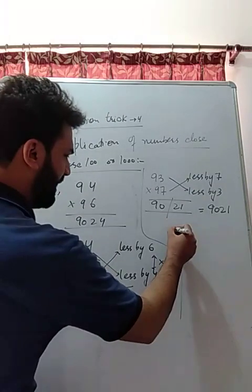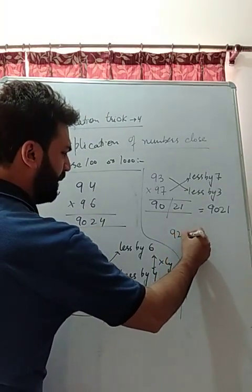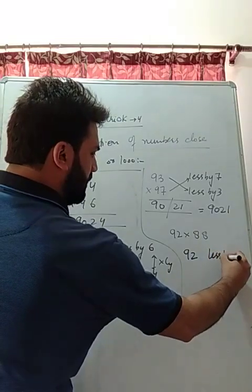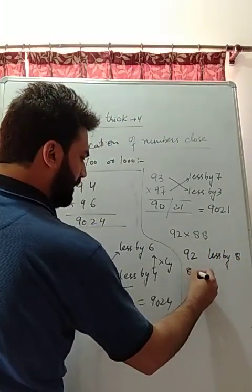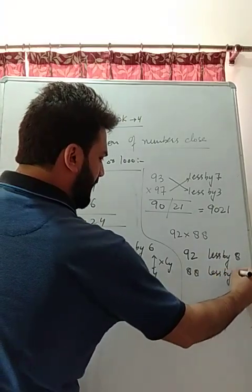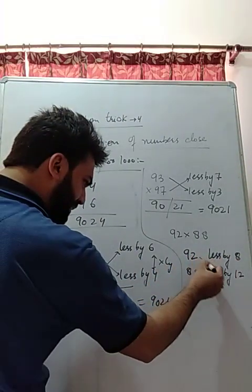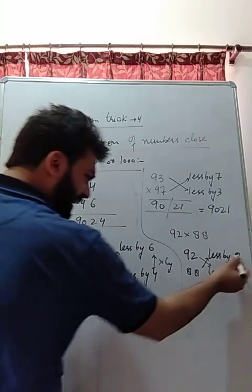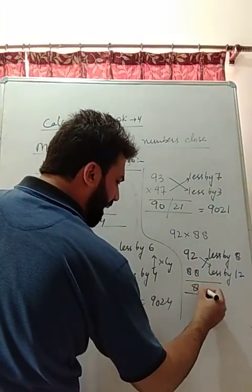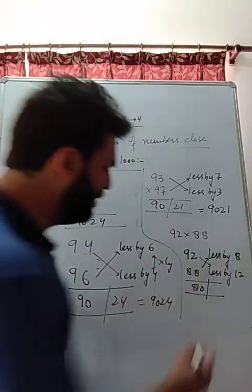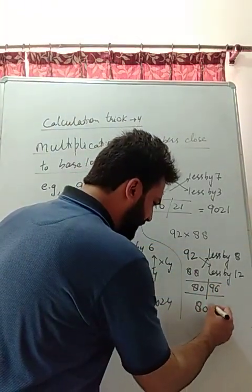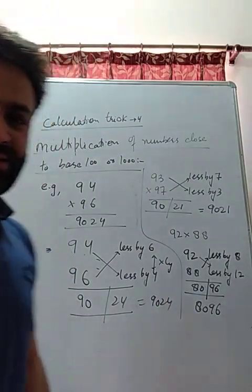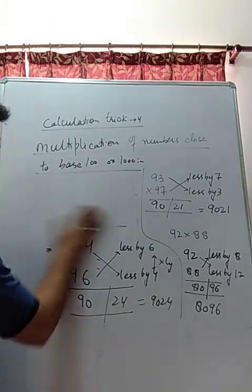Another example: 92 multiplied with 88. Let's see this one. 92 is less by 8, 88 is less by 12. Subtract them in cross: 92 minus 12 is 80, 88 minus 8 is 80. Now what is 12 into 8? 96. What is the answer? 8096.